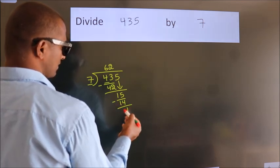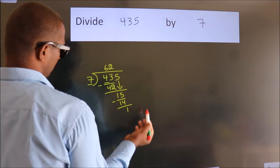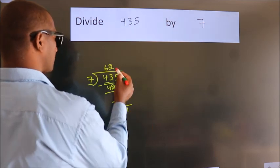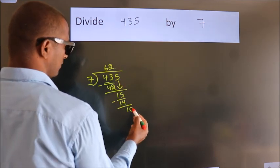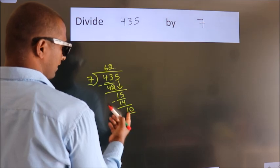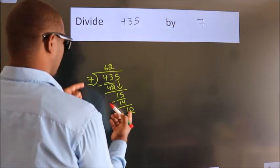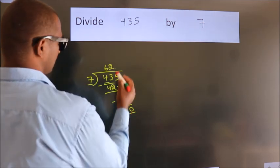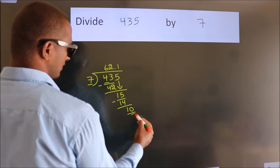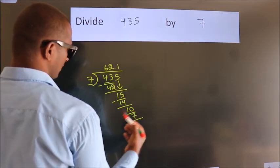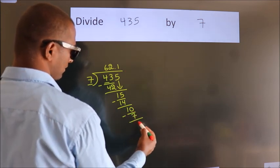After this, no more numbers to bring down. So what we do is we put a dot and take 0. So 10. A number close to 10 in the 7 table is 7 ones, 7. Now we subtract. We get 3.